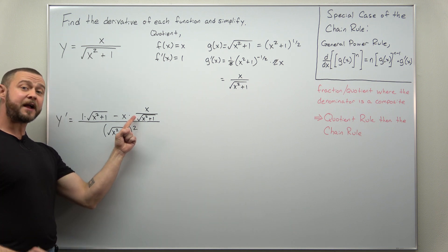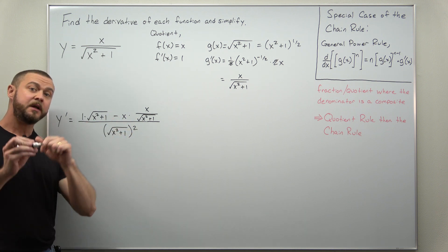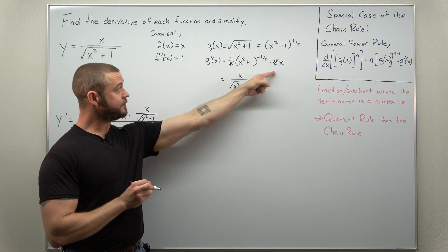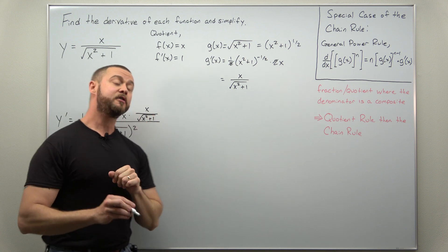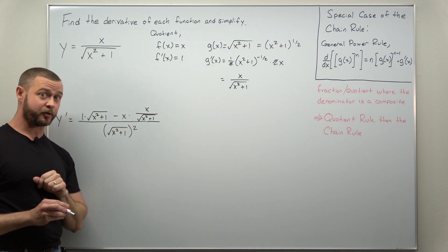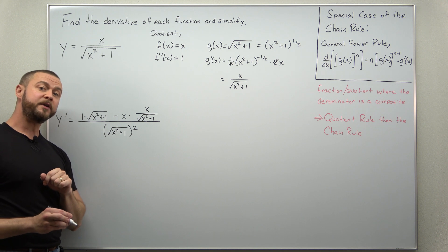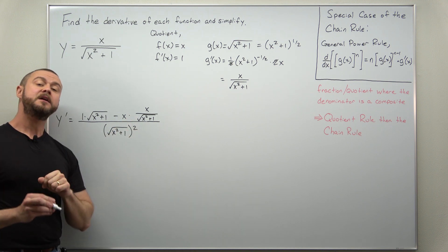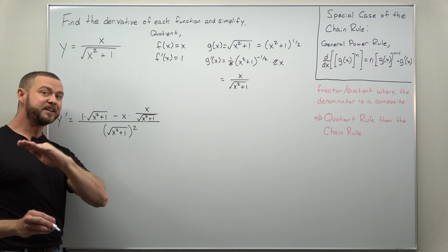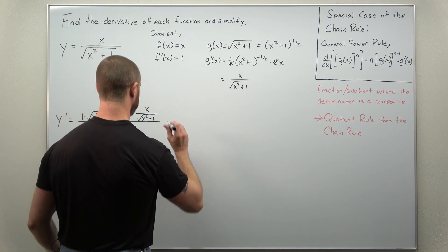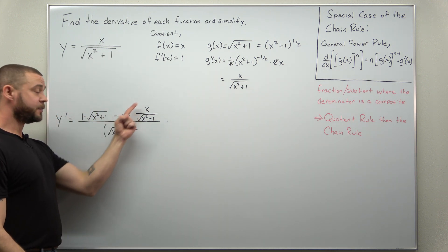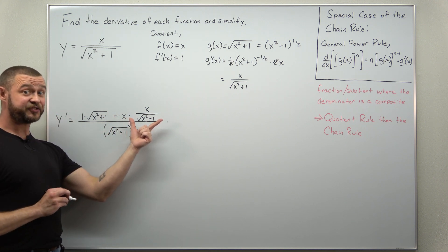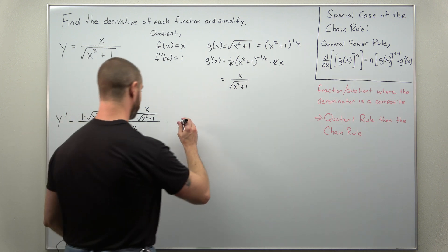The difficulty is in simplifying this, because what we have is a fraction within a fraction. It doesn't matter if you write your derivative as a fraction or leave it with negative exponents — you still have to simplify that messy numerator. The reason I like using fractions within fractions is there's a very nice clean way to simplify: we're going to multiply the numerator and denominator by the LCD, and here that's just the square root of x squared plus one.